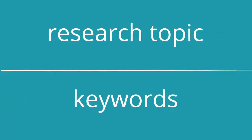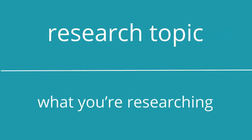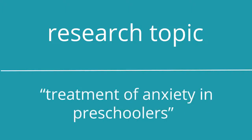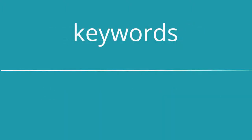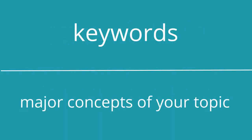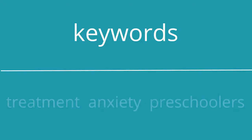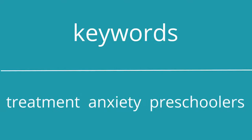So what's the difference between a research topic and keywords? Think of it this way. A research topic is simply what you're researching. If someone asked you what you were doing your project on, you could probably say a phrase or a sentence describing what you're trying to learn more about. In contrast, keywords represent the major concepts from that research topic — a way of simplifying your research topic to something that a database could understand. For this reason, your keywords would just be a list of words and possibly phrases, not anything that could really stand alone as a sentence.